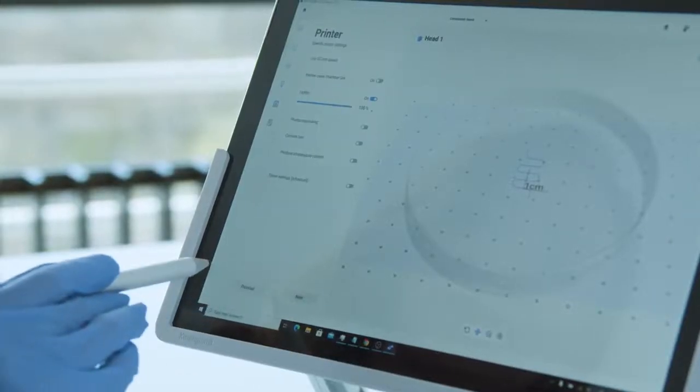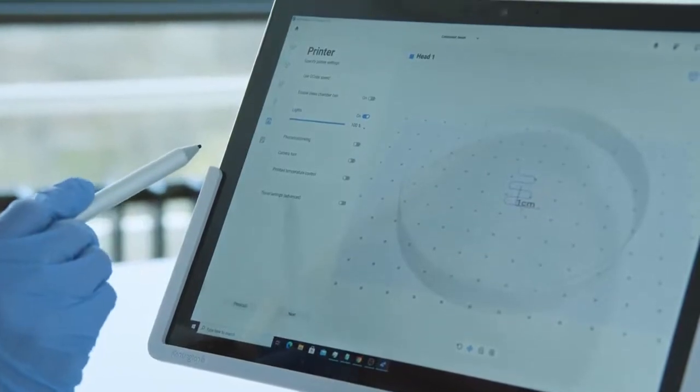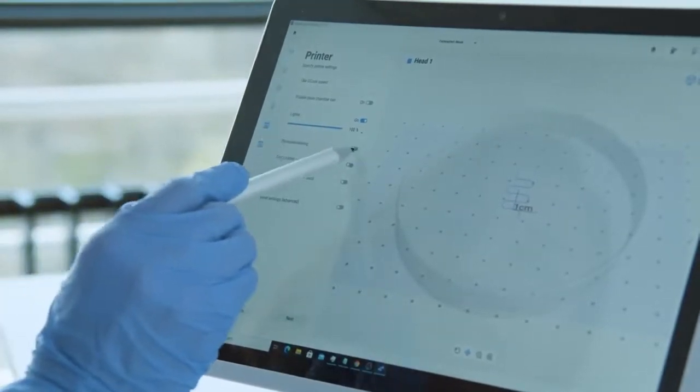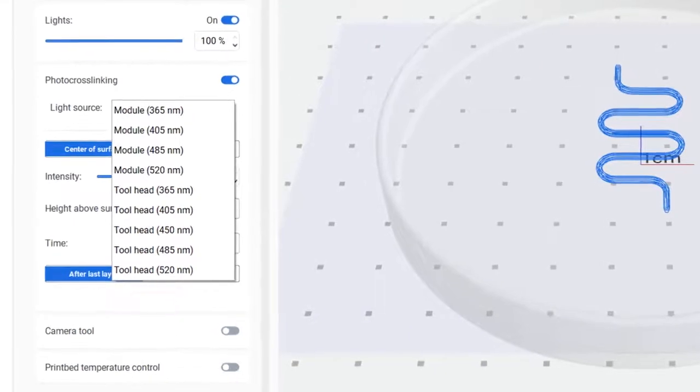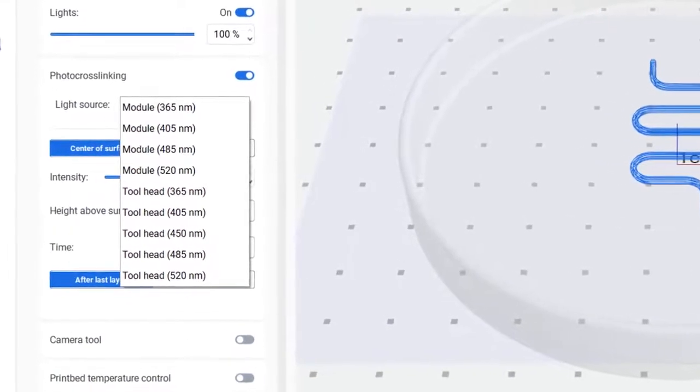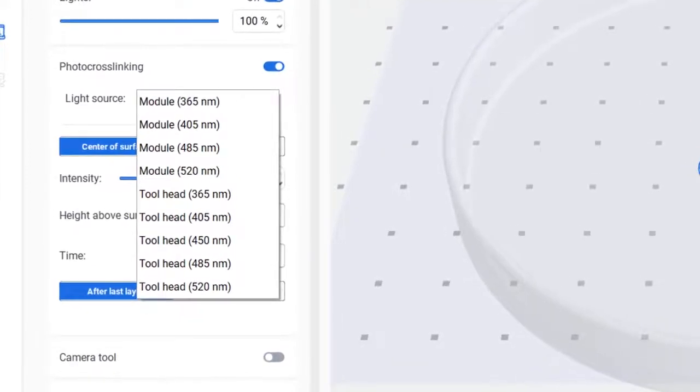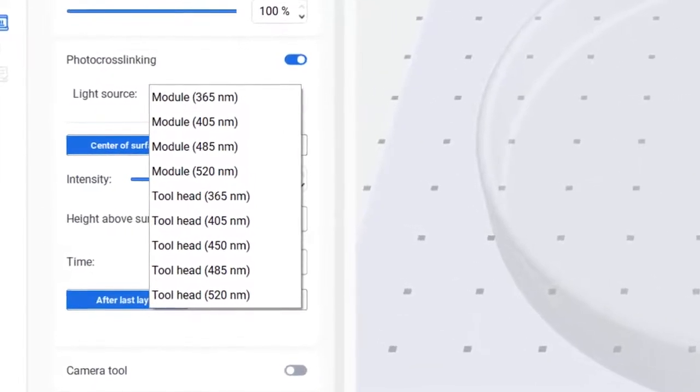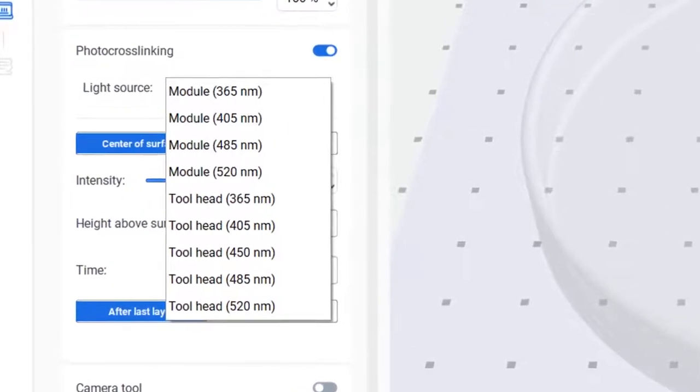If you are using photo-crosslinkable bioinks, I have good news for you. The Bio-X6 is equipped with four in-built photocuring modules and print tools to allow you to photo-crosslink by different wavelengths including 365, 405, 450, 485, and 520 nanometers.